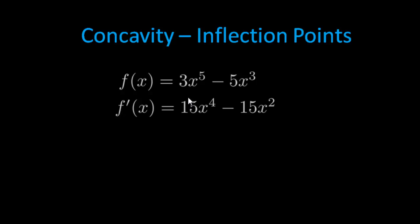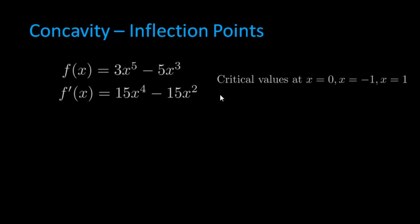Now, what we did in that video was we tried to find critical values to find local maxes and local mins. Well, f prime took the derivative. We got 15x to the fourth minus 15x squared. I'm just going to quickly go through this. If you have not seen that video, please go watch that so you know where I'm coming up with these things. Now, we found that the critical values in that video were 0, negative 1, and 1.